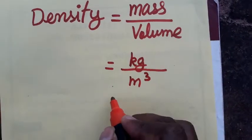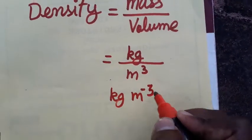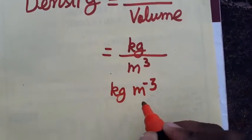The SI unit will be kg meter minus 3. Density SI unit will be kg meter minus 3.